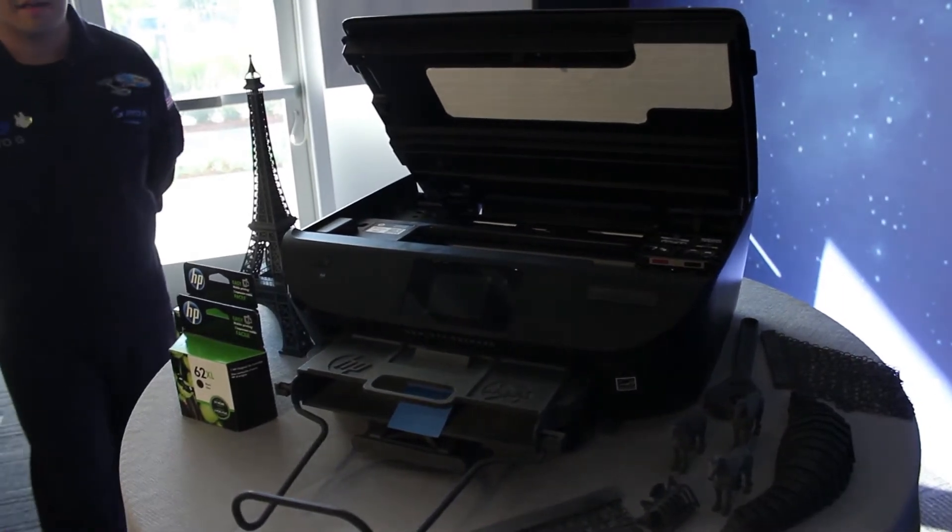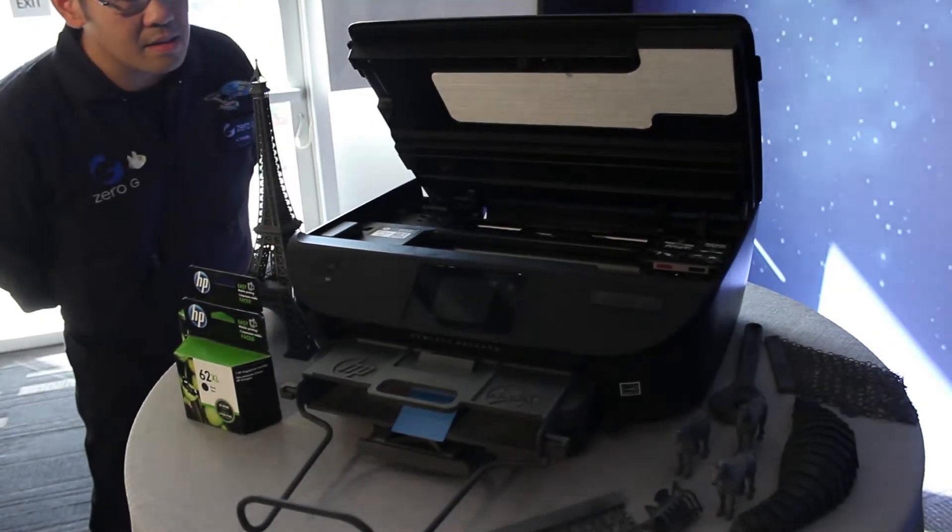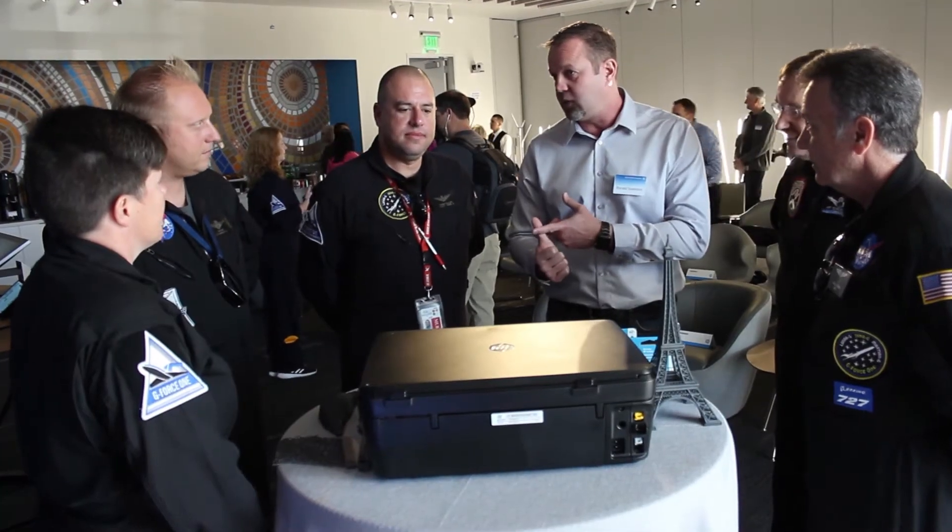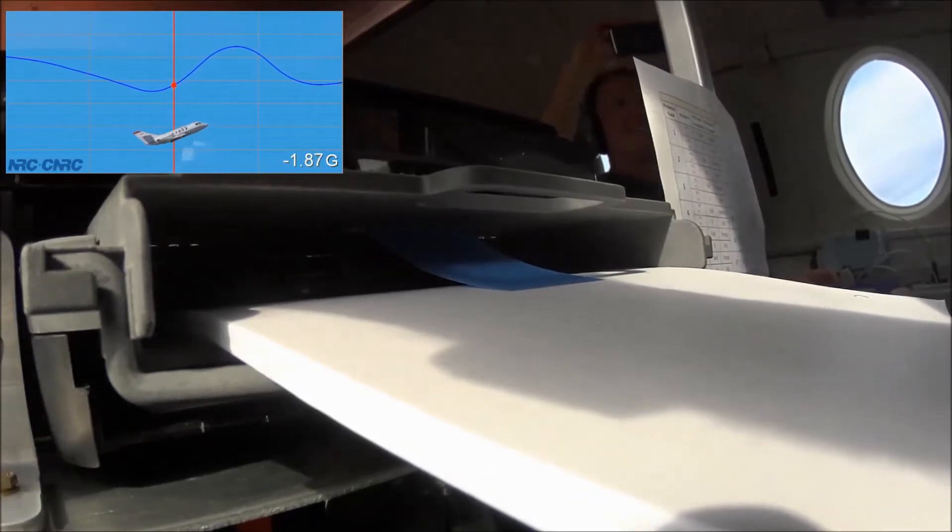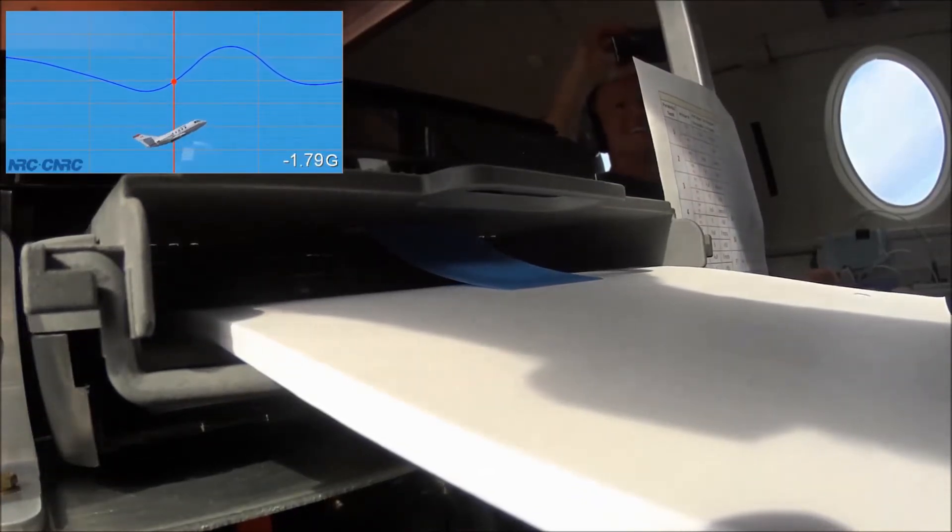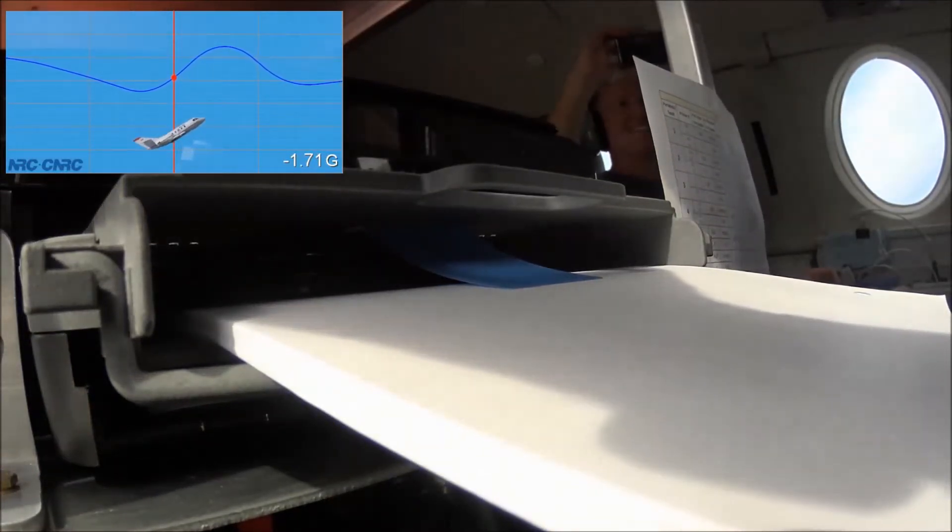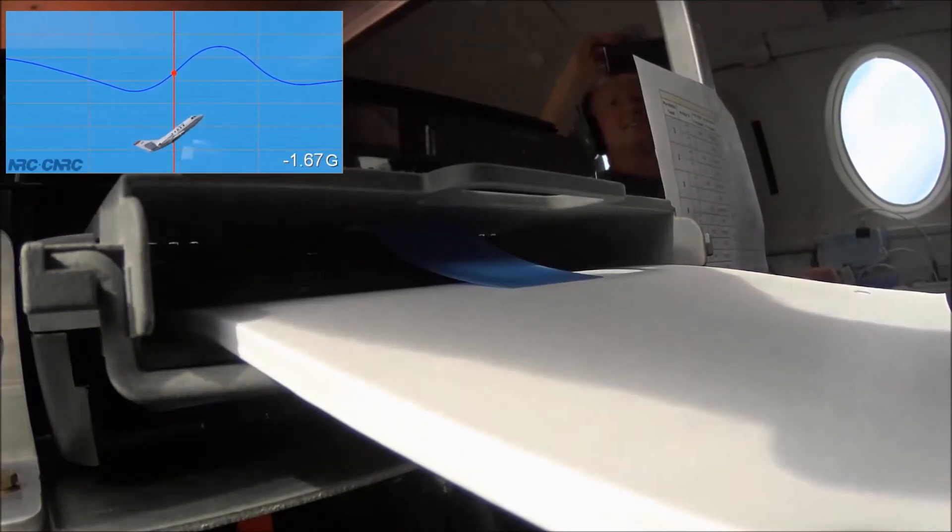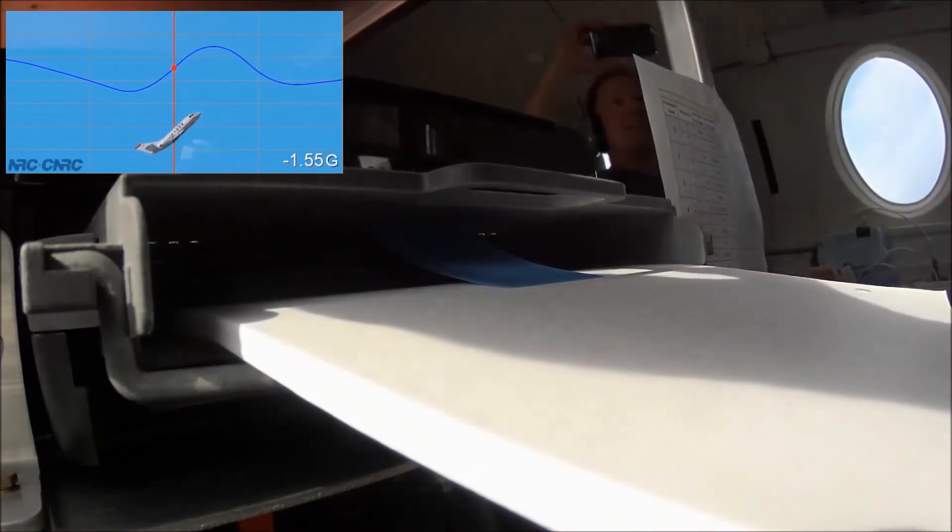The printer itself looks pretty much like your regular desktop printer, but there's some key differences that make it space-worthy. Since HP couldn't just rely on gravity to feed the paper through, it had to design a new part to hold it in place for the head of the inkjet to make contact.